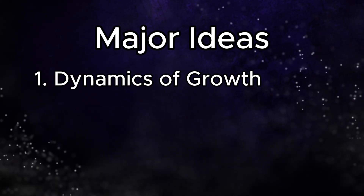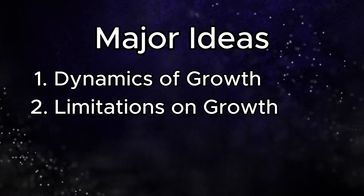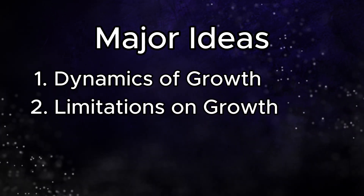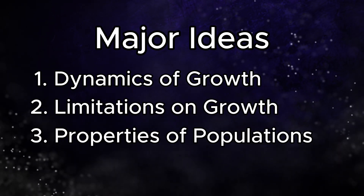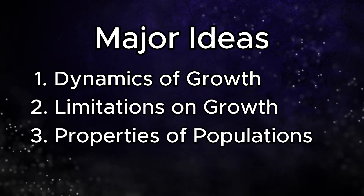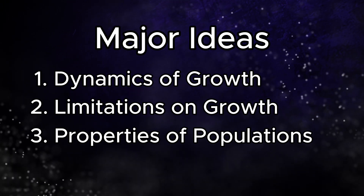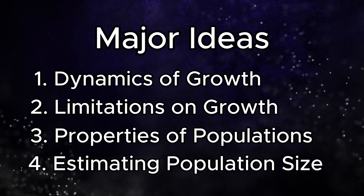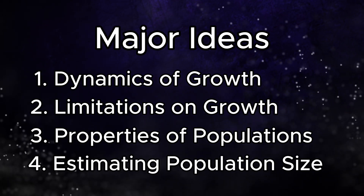First, dynamics of growth. Second, limitations on growth. Third, properties of populations, including distribution and life history traits. And lastly, how we estimate population sizes. With these four major ideas mastered, you'll be more than well prepared for this part of the AP Biology curriculum.